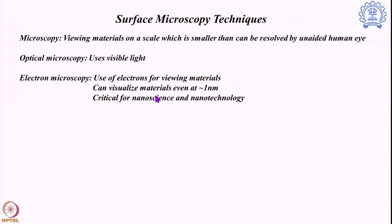Electron microscopy has an added advantage over optical microscopy because the light used in optical microscopy has a wavelength in the region of nanometers. To find out anything lower than that is very tricky, whereas with electron microscopy we can go further down and visualize systems even below one nanometer. This electron microscopic system and its evolution was very critical for the development of nanoscience and nanotechnology, where we generally handle samples in the nanometer or sub-nanometer region.